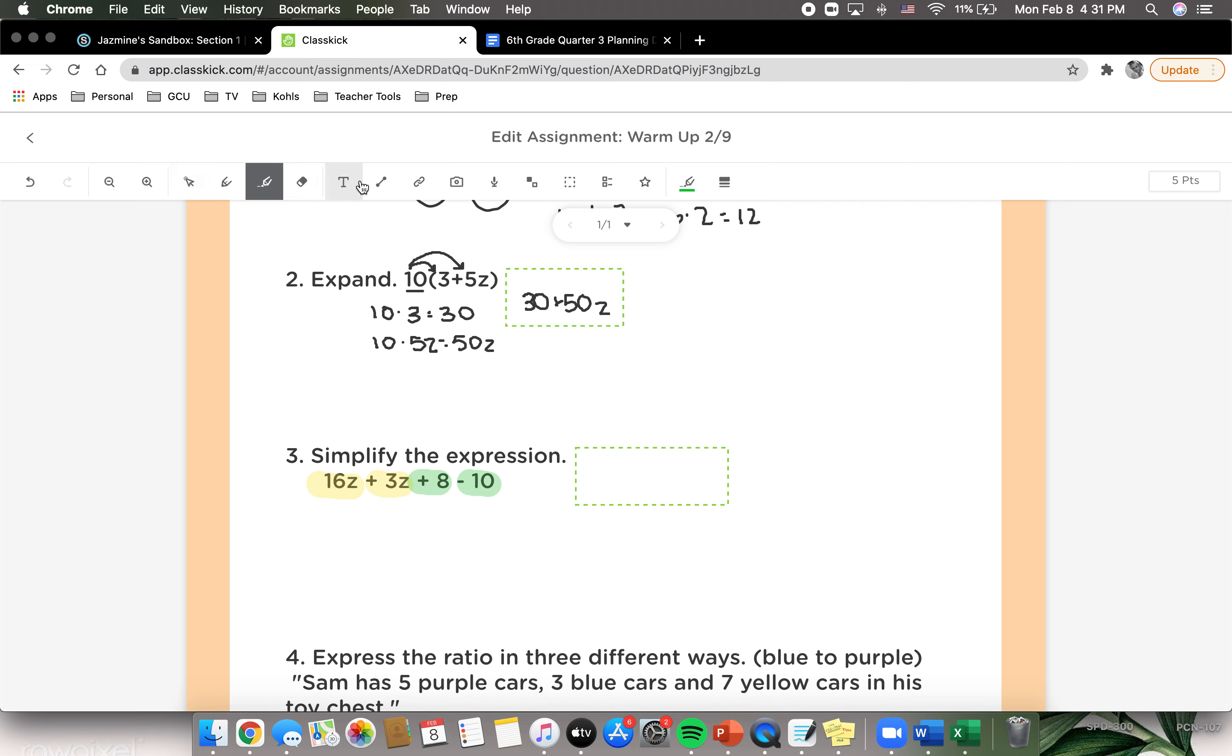And we're going to solve now. So we can combine like terms. So 16z plus 3z, we can add together, which gives us 19z. And then we have a positive 8 minus 10. And we know that 10 minus 8 equals 2, but since the 10 is higher, it's going to be a negative number. So we're going to get negative 2. So our final answer would be 19z minus 2.